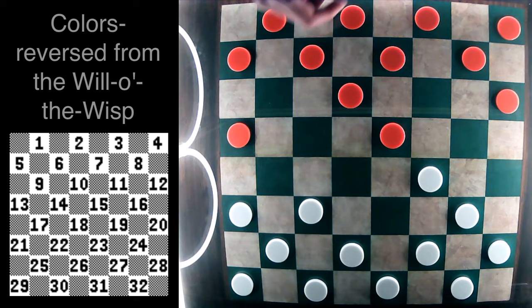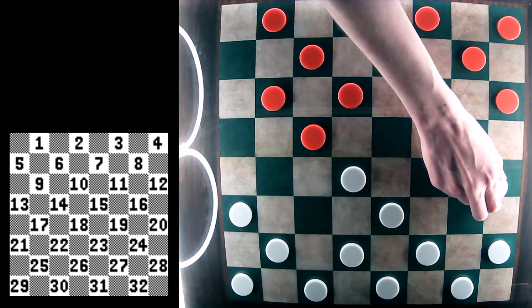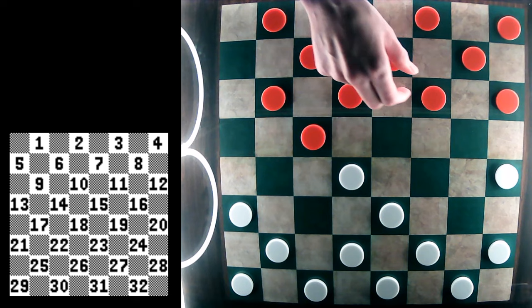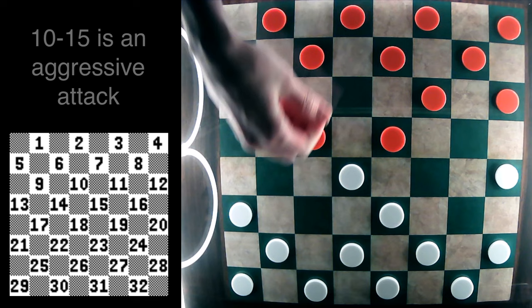But let's talk through the double corner opening. So in this opening, instead of the pretty conservative response with 11-16, red is going to play this 10-15 move. Which, if it's the first time seeing this attack, it can maybe throw white off guard a little bit.